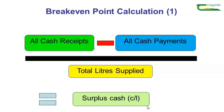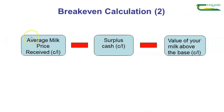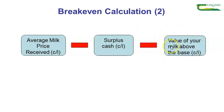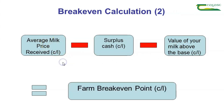We now know how much surplus cash we have. What we need to figure out is the break-even point. For this, we need to know the average milk price received for your farm last year. We take away the surplus cash we have already figured out, and this will give us the break-even point before we allow for fat and protein. We then need to figure out the value of your milk above the base price, as higher fat and protein milk will demand a higher price, and lower fat and protein milk will demand a lower milk price.